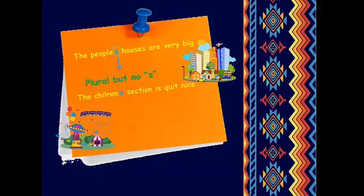Here, the children's section is quite nice. Again, children is a plural, but it doesn't end with S, like most other plural words. So, we can't add just an apostrophe at the end of the word, so we put apostrophe S.